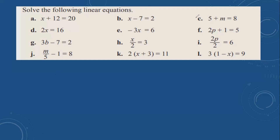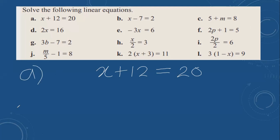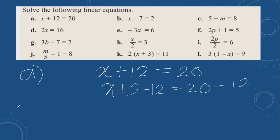I will take the first one: x plus 12 equals 20. The opposite of plus 12 is minus 12, so I will do the same thing to the other side also. Plus 12 and minus 12 cancel out. 20 minus 12 is 8, so x is equal to 8.